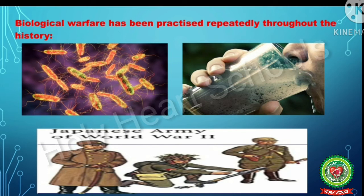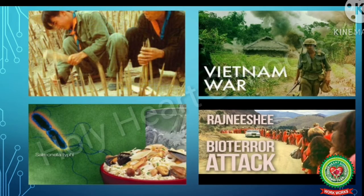The Japanese army conducted human experimentation by using biological weapons on Chinese soldiers and civilians during World War II. Vietnamese guerrillas used needle-sharp punji sticks dipped in feces to cause severe infections after stabbing an enemy soldier during the Vietnam War.